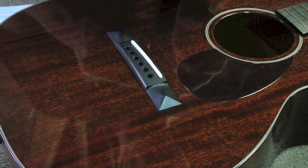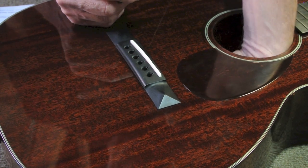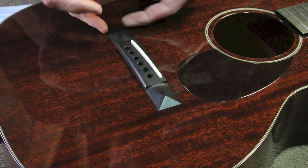Obviously, you know this is the bridge. Underneath here is something called a bridge plate, which is there to sort of reinforce this area of the guitar.